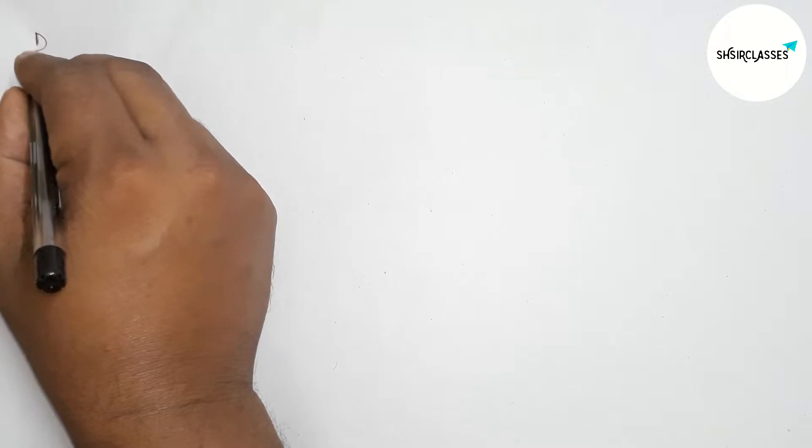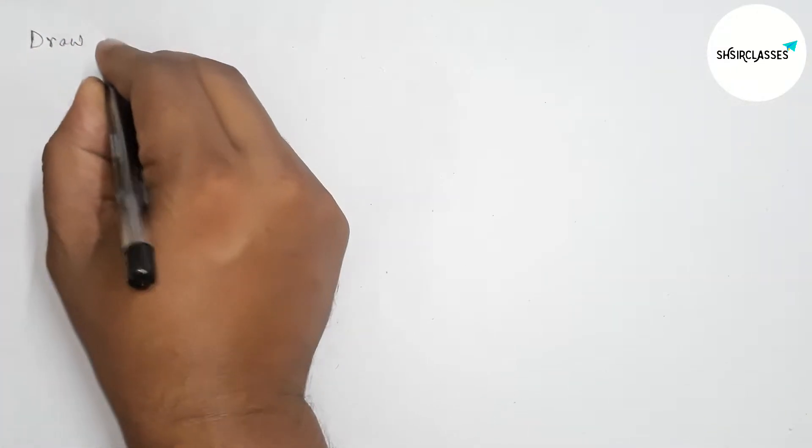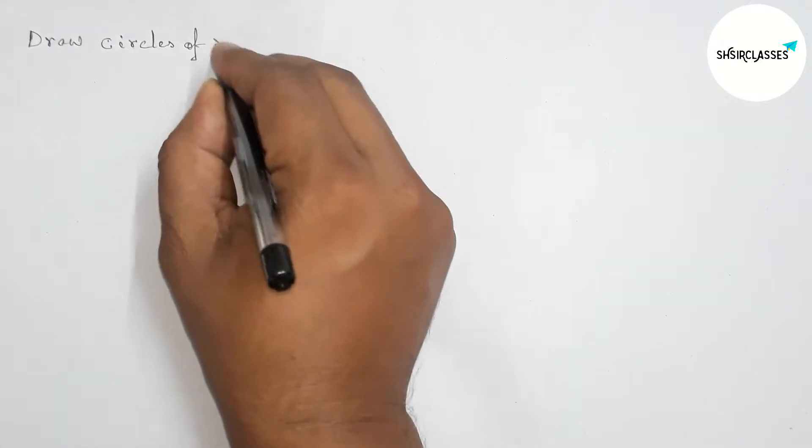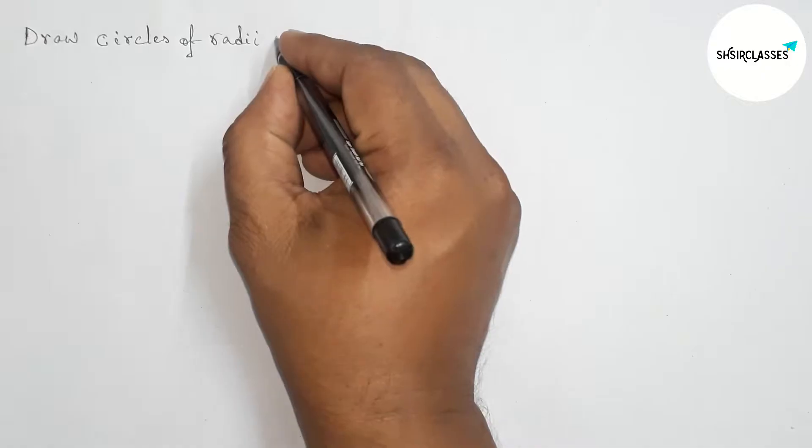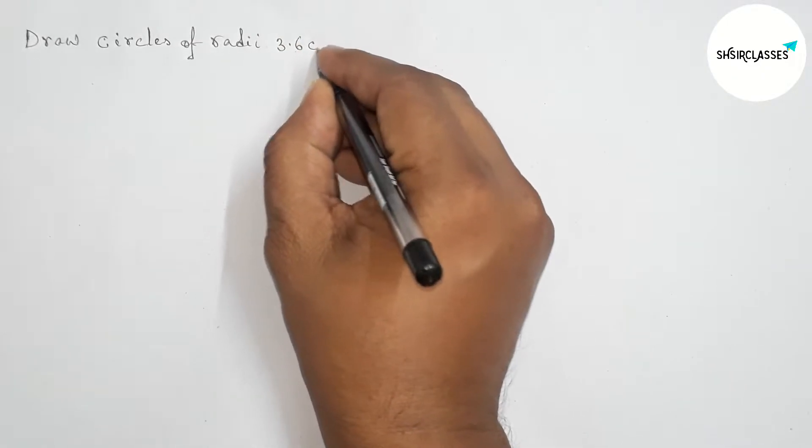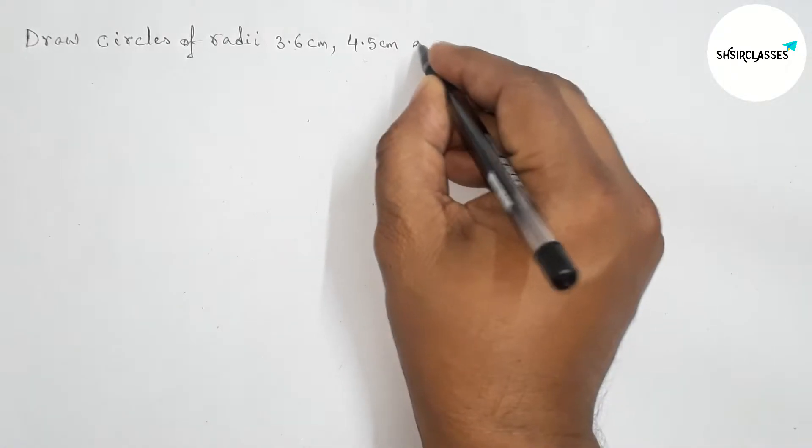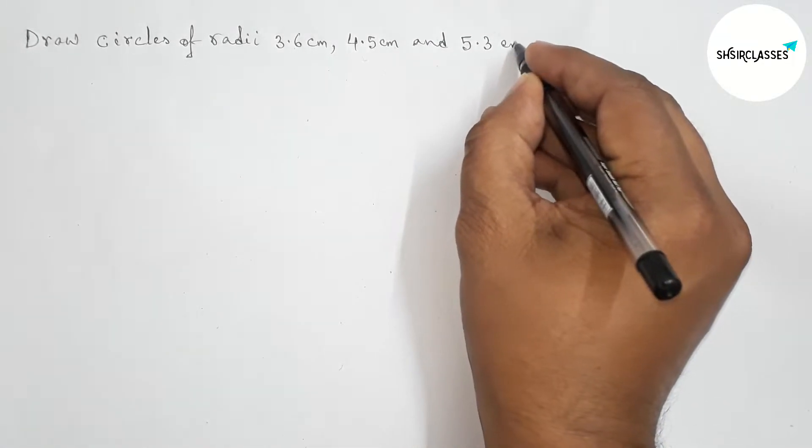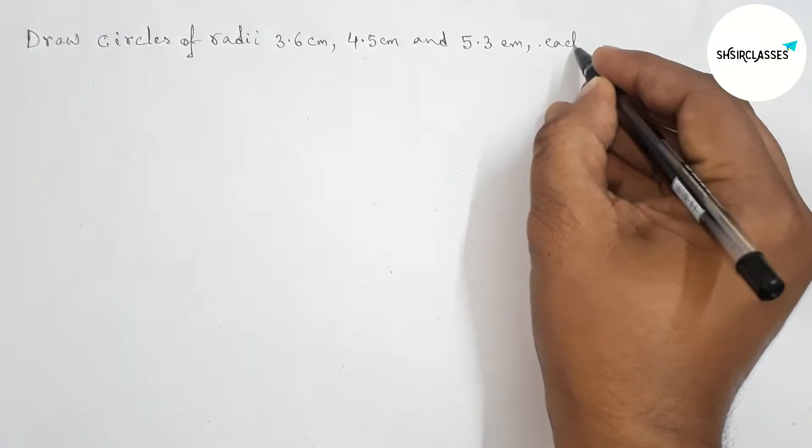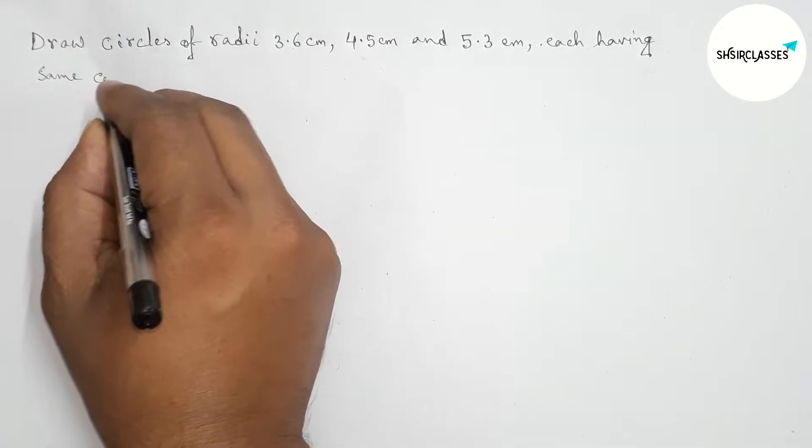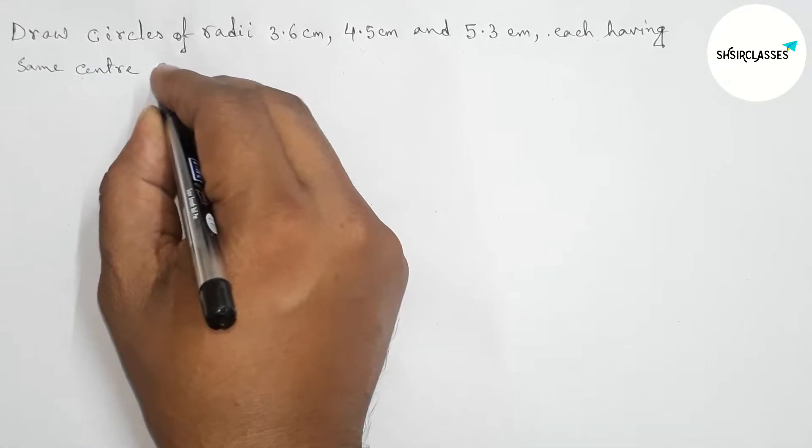Hi everyone, welcome to SI Share Classes. Today in this video I'm going to construct concentric circles with radii 3.6 centimeters, 4.5 centimeters, and 5.3 centimeters, each having the same center O, in an easy way. Please watch the video till the end, so let's start.